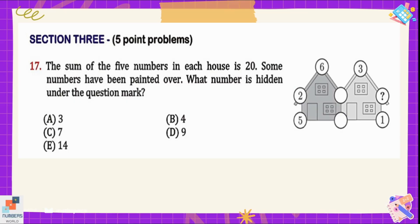Question number 17: the sum of the 5 numbers in each house is 20, and some numbers have been printed over. What number is hidden under the question mark? It is given that the sum of the 5 numbers in each house is 20. Here, 6 plus 2 plus 5 equals 13. So 13 plus what equals 20? Since 13 plus 7 equals 20, the sum of the dark grey house is 20 if we write 7 there.